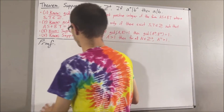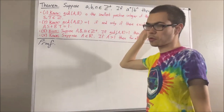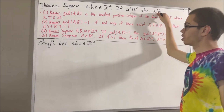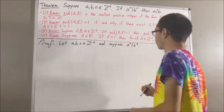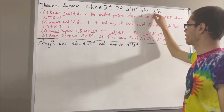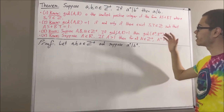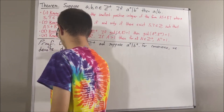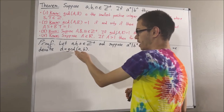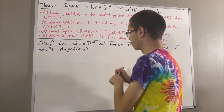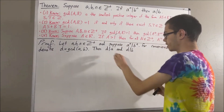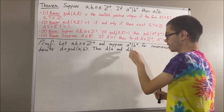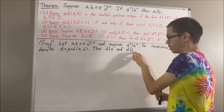Now let's get into proving this theorem. To start out the proof, let's give ourselves three positive integers a, b, and n. We want to prove if a to the n divides b to the n, then a divides b. So let's suppose that a to the n is a divisor of b to the n. The goal is to prove that a is a divisor of b. Let's denote the greatest common divisor of a and b by the letter d. Since d is the greatest common divisor of a and b, d is a divisor of both a and b. Since d is a divisor of a, there is some integer p such that a is equal to d times p. Similarly, since d is a divisor of b, there is some integer q such that b is equal to d times q.